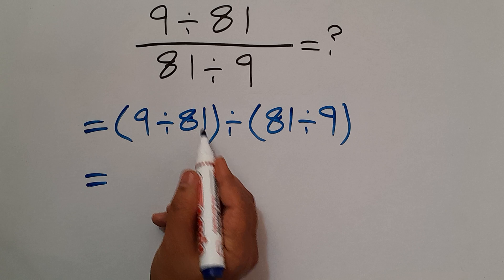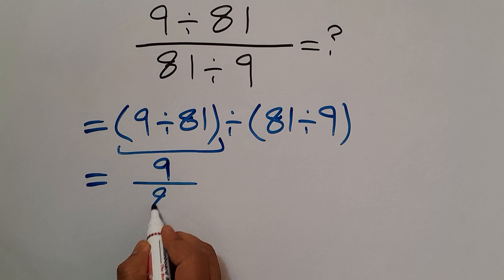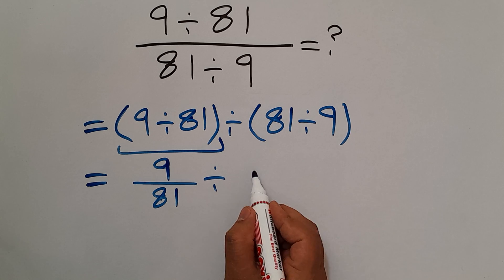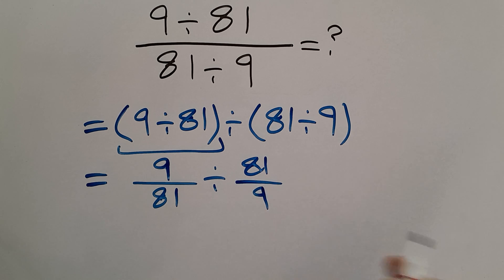9 divided by 81, we can write 9 over 81 divided by, and instead of these parentheses we can write 81 over 9.